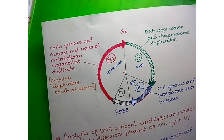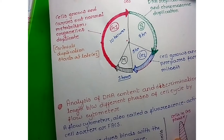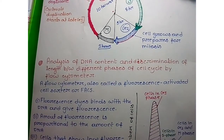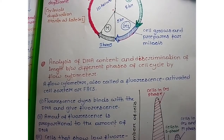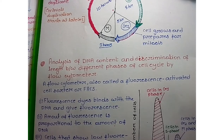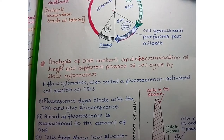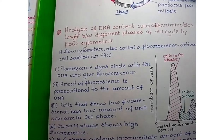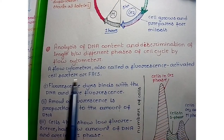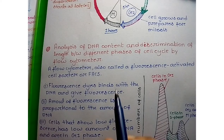Now we need to analyze the DNA content of a cell. Suppose you are provided with a sample of cells and need to determine whether those cells are in interphase, M phase, or a specific sub-phase. We discuss one type of experiment — using a flow cytometer, also called a fluorescence-activated cell sorter (FACS) — to analyze DNA content and determine whether cells are in G1, S, G2, or M phase.